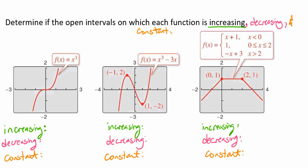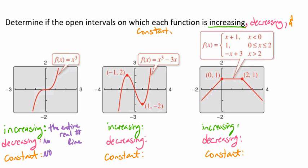Looking at our first graph, although it might appear that there's an interval where the function is constant, if you were to zoom in you'd see that each value is still smaller than the next as it moves. So this function is increasing over the entire real number line. We have no decreasing and no constant intervals on this one.